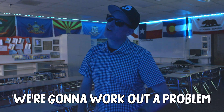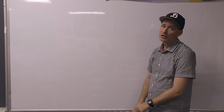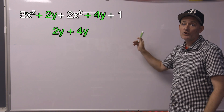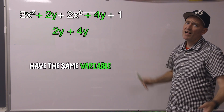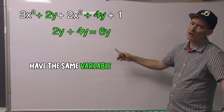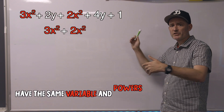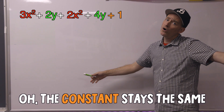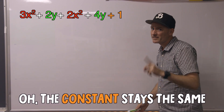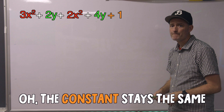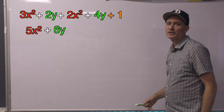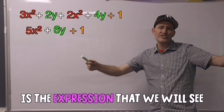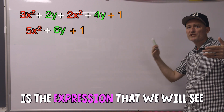In a minute, we're going to work out a problem and combine terms: 3x squared plus 2y plus 2x squared plus 4y plus 1. 4y and 2y have the same variable — add them and you get 6y. 3x squared and 2x squared have the same variable and powers — that's 5x squared. The constant stays the same at 1. So the simplified expression is 5x squared plus 6y plus 1.